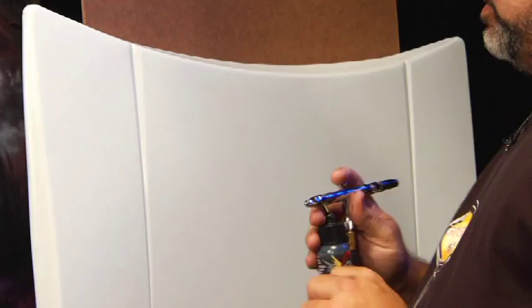Same airbrush, the same air pressure, the same reduction as before, but now we're working on a non-porous surface. Before I was working on Pellon. This is now a little mini hood made of metal.